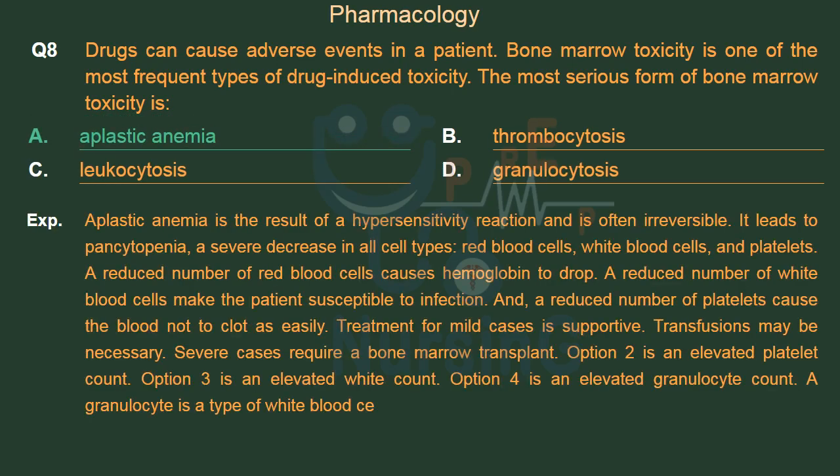Aplastic anemia is the result of a hypersensitivity reaction and is often irreversible. It leads to pancytopenia, a severe decrease in all cell types: red blood cells, white blood cells, and platelets. A reduced number of red blood cells causes hemoglobin to drop. A reduced number of white blood cells makes the patient susceptible to infection, and a reduced number of platelets causes the blood not to clot as easily. Treatment for mild cases is supportive; transfusions may be necessary. Severe cases require a bone marrow transplant.